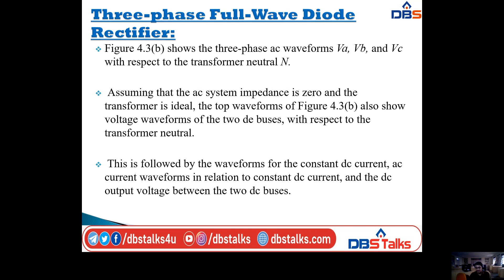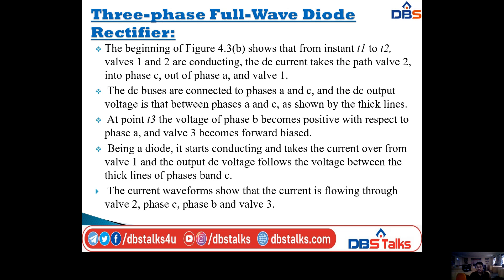The second diagram shows the three-phase AC waveforms Va, Vb, and Vc with respect to the transformer neutral. Assuming the AC system impedance is zero and the transformer is ideal, the top waveforms also show voltage waveforms of the two DC buses with respect to the transformer neutral. This is followed by waveforms for the constant DC current, AC current waveforms in relation to constant DC current, and the DC output voltage between the two DC buses.